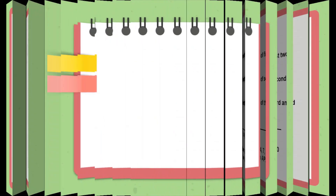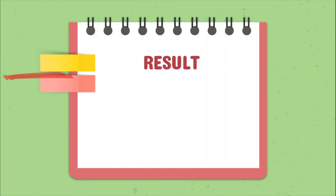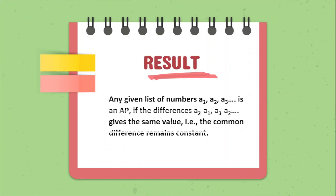So the result of this activity is: any given list of numbers A1, A2, A3 is an AP if the difference A2 minus A1 and A3 minus A2 gives the same value — that is, the common difference remains constant.